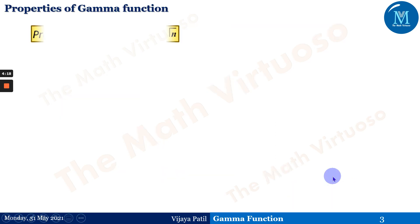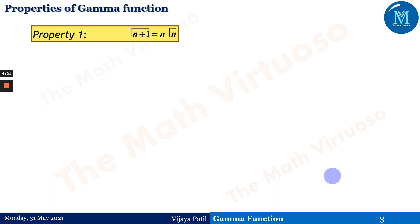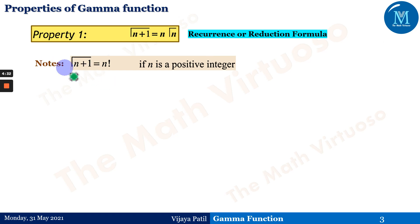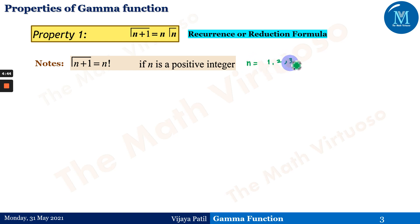There are basically two important properties of the gamma function. Property one: gamma of n plus 1 equals n times gamma of n, which is also known as the recurrence or reduction formula. The first note states that gamma of n plus 1 equals n factorial when n is a positive integer, meaning n belongs to the positive integers.